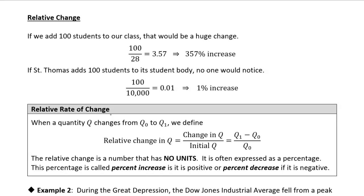So in the case of adding 100 students to our class, you know, if we had 28 students in the class to begin with, and we added 100 to that, then our relative rate of change would be 100 over 28. So that's a 357% increase in the number of students.